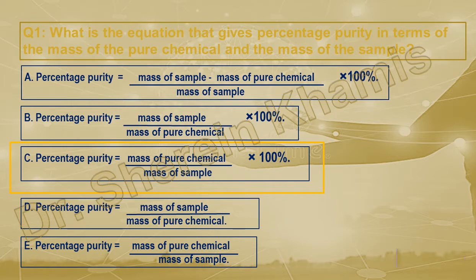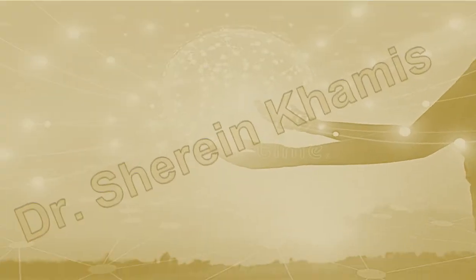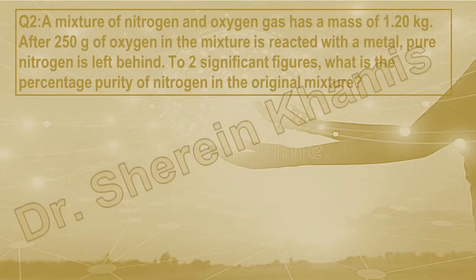Question number two: A mixture of nitrogen and oxygen gas has a mass of 1.2 kilograms. After 250 grams of oxygen in the mixture is reacted with a metal, pure nitrogen is left behind. Give your answer to two significant figures. What is the percentage purity of nitrogen in the original mixture?